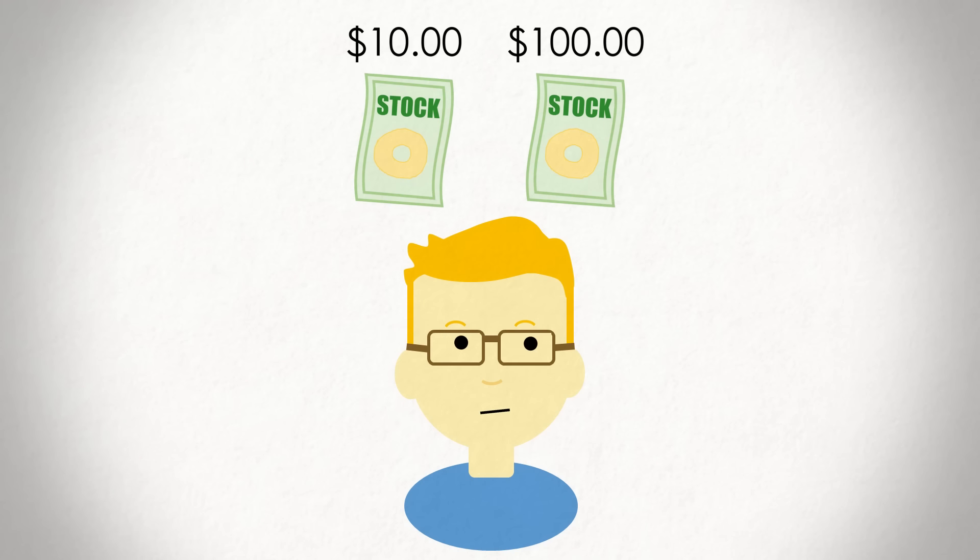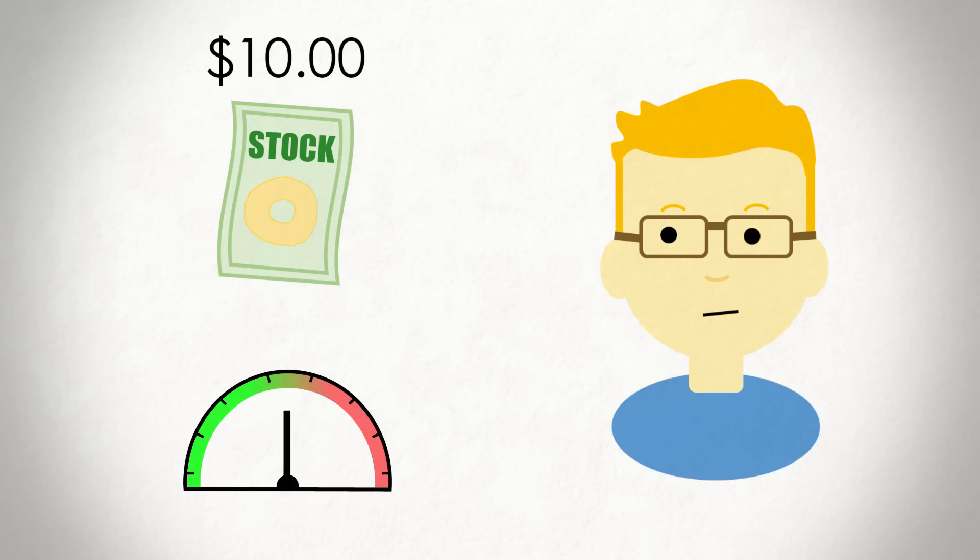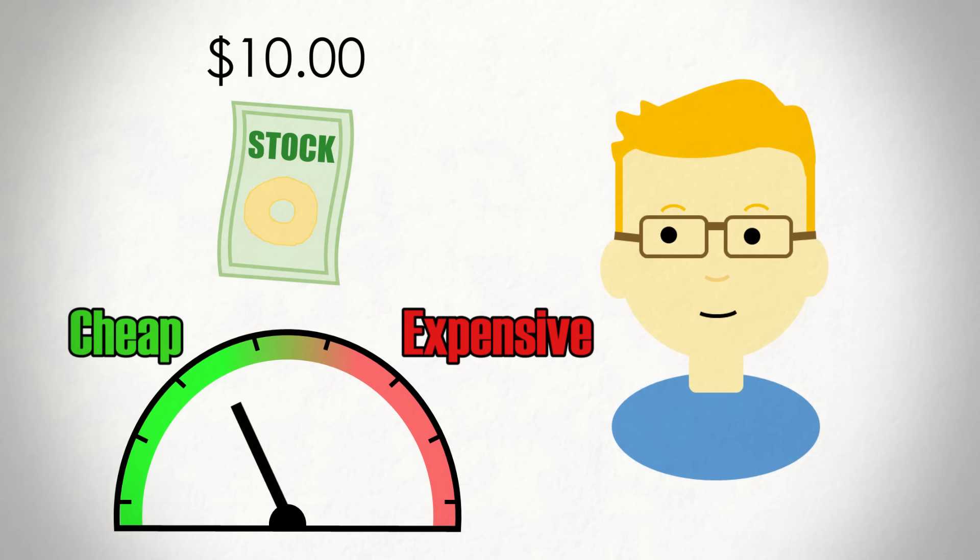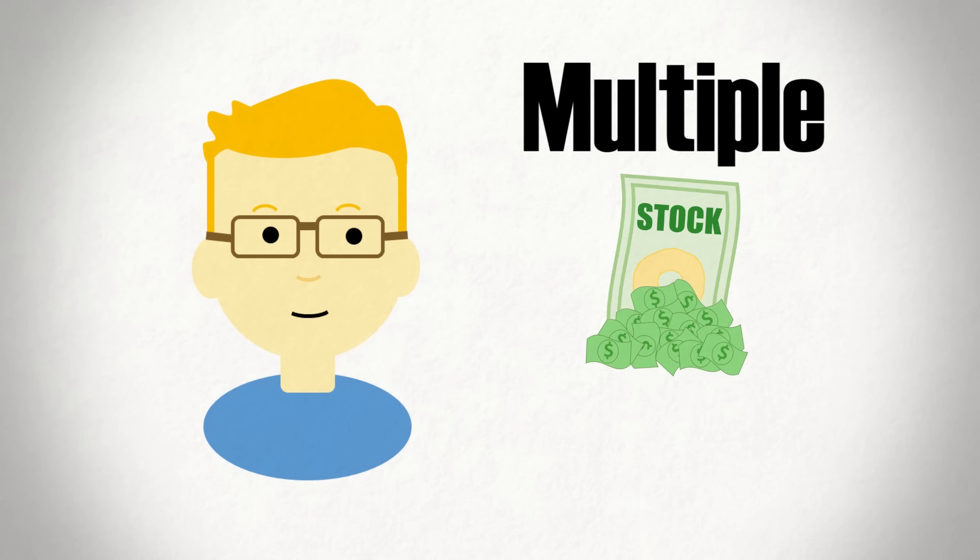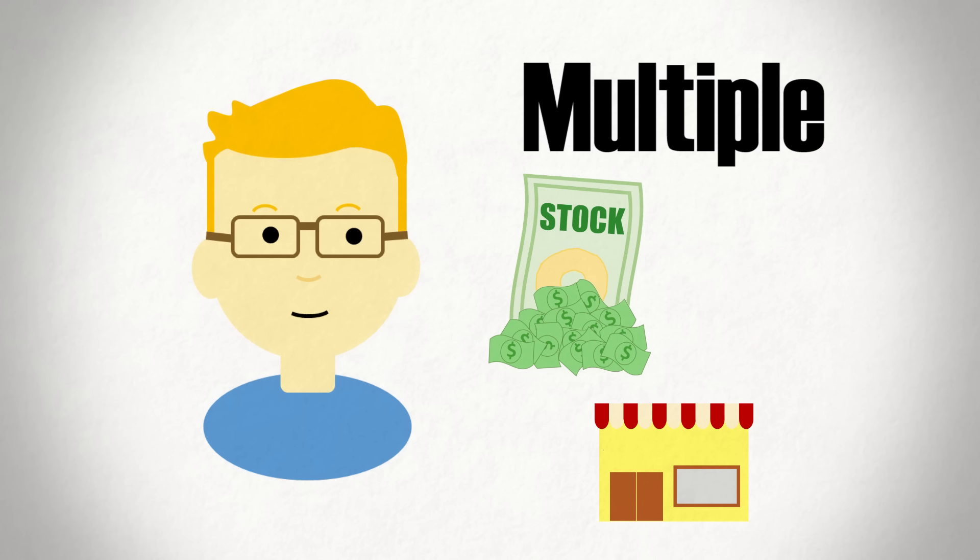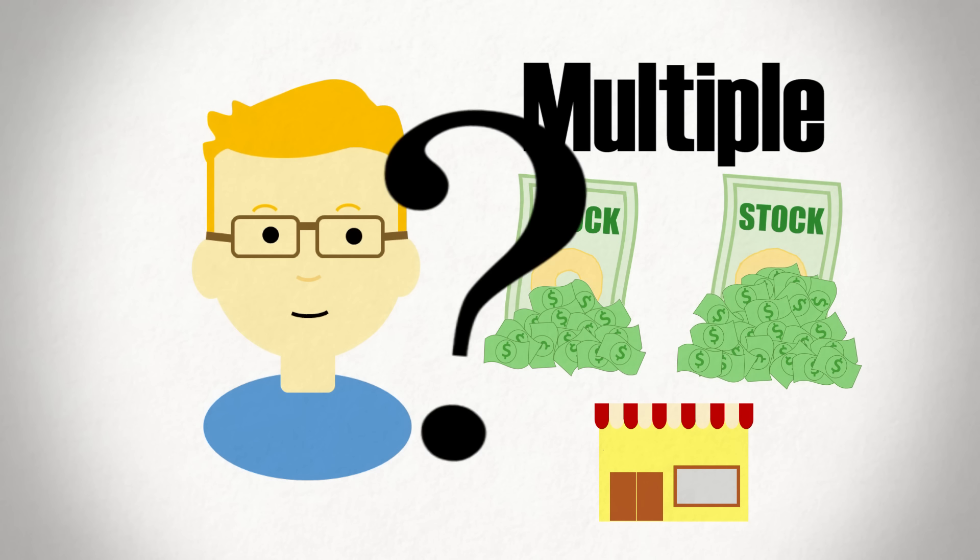There's no perfect answer to these questions, but there are ways to at least gauge how expensive or cheap a stock is. You see, by using something called a multiple, we can figure out how much we're paying for a stock's underlying business, and if this price has changed over time. Interested? We'll dive into the topic and more on today's Plain Bagel.